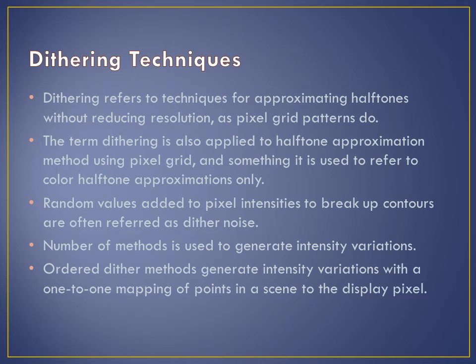Random values are added to pixel intensities to break up contours, and these are often referred to as dither noise. Various algorithms have been used to generate these random distributions. The effect is to add noise over an entire picture, which tends to soften intensity boundaries. One category is ordered dither methods, which generate intensity variation with a one-to-one mapping of points in a scene to display cells.